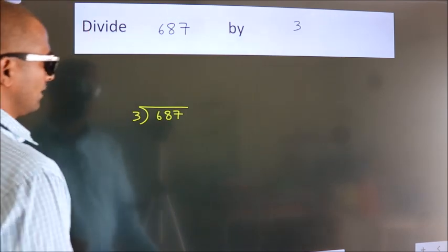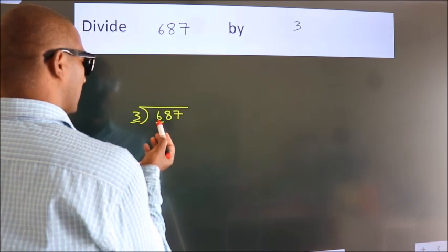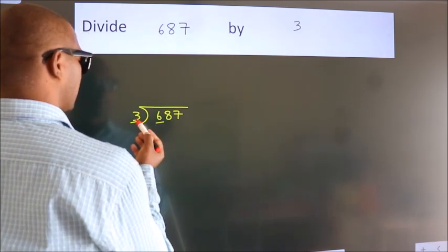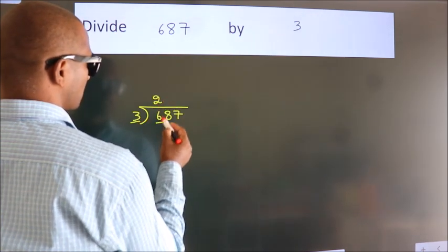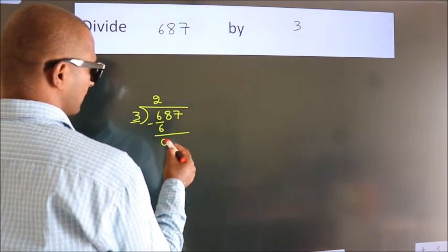Next, here we have 6, here 3. When do we get 6 in the 3 table? 3 times 2 is 6. Now we should subtract. We get 0.